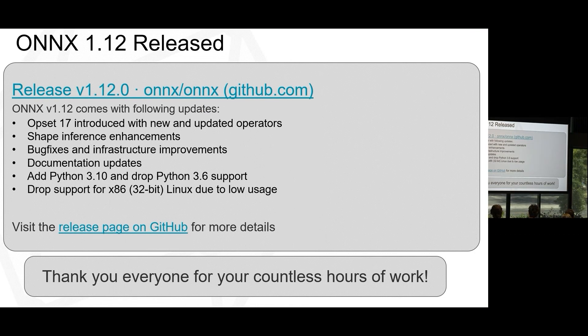A few days ago, ONNX 1.12 was also introduced, coming with ONNX Opset 17 with many more new operators and a few updated operators as well. There were shape inference enhancements, bug fixes, infra updates, and doc updates. We dropped support for Python 3.6 and added support for Python 3.10, and we also dropped support for 32-bit Linux due to low usage. The release notes link will give you more details on this release.